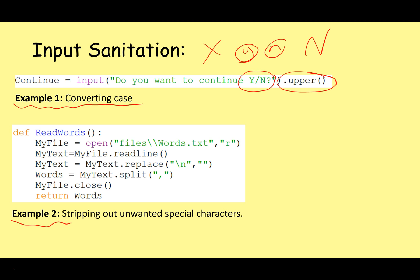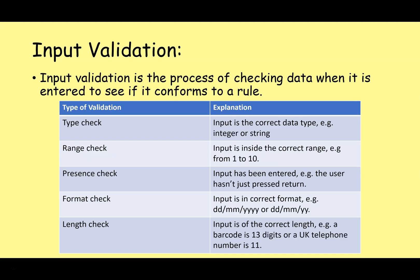In the next example, I'm stripping out unwanted special characters. I have a subroutine that reads in a text file, and I want it to remove any newline characters — I don't want them as they could mess up my program later on. So I just replace them with nothing, and add newline characters back when I want them later. Moving on from input sanitation to input validation: input validation is the process of checking data when it is entered to see if it conforms to a rule.